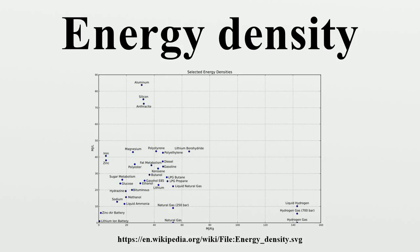There are many different types of energy stored in materials, and it takes a particular type of reaction to release each type of energy. In order of the typical magnitude of the energy released, these types of reactions are nuclear, chemical, electrochemical, and electrical.